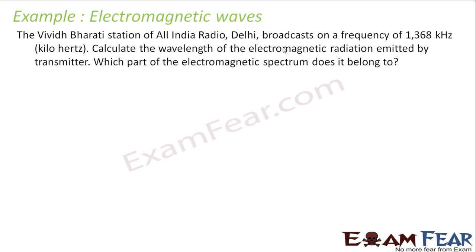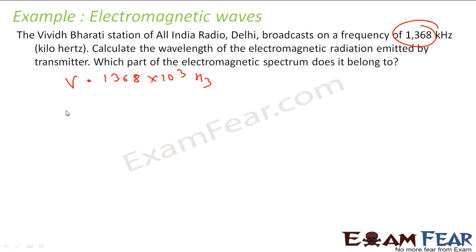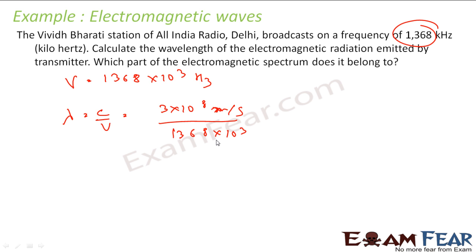Next question: the Vividh Bharati station of Delhi broadcasts at a frequency of 1368 kilohertz. We have to find the wavelength of the electromagnetic radiation emitted and identify which part of the electromagnetic spectrum it belongs to. Using λ = c/ν: c = 3 × 10⁸ m/s, ν = 1368 × 10³ Hz. Solving gives λ ≈ 219.3 meters — so it belongs to the radio waves.